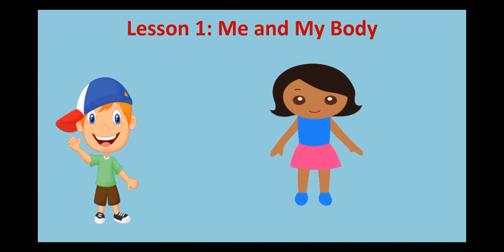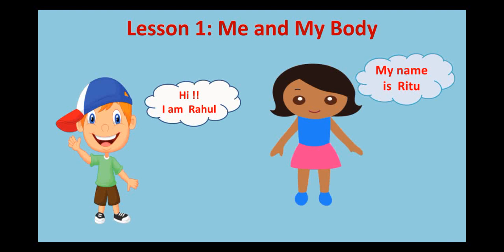The first lesson is Me and My Body. While learning this lesson, I have two other friends with me. Hi, I am Rahul. My name is Ritu. So I have two friends for all of you — Rahul and Ritu. Rahul and Ritu will be helping us to study and understand this lesson. What is the name of the lesson? Me and My Body.